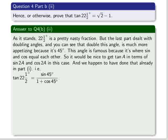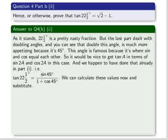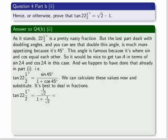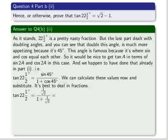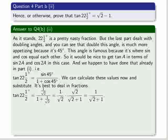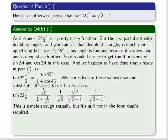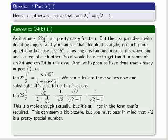We can calculate these values and substitute now. It's best to deal in fractions. So sine of 45 degrees equals the cosine of 45 degrees, which is 1 over the root of 2. So we simplify that, and we get 1 over the root of 2 plus 1. This is simple enough, but it's not in the form that's been required, which was the root of 2 minus 1. This can seem a bit bizarre, but you must bear in mind that the root of 2 is a pretty special number. Not as famous as pi, perhaps, but it's really been studied heavily. So how can we get a minus 1 into this expression?